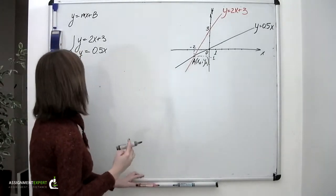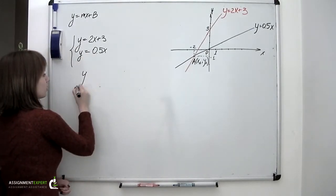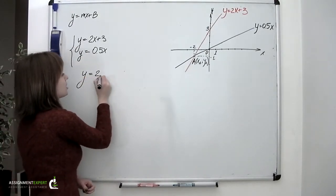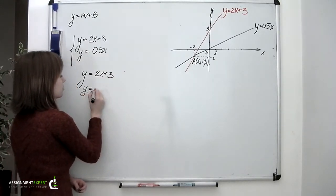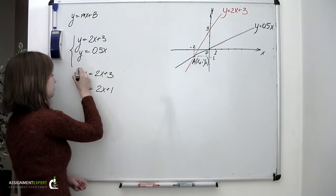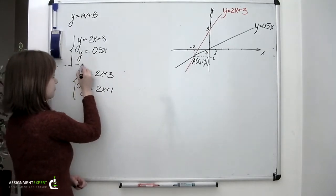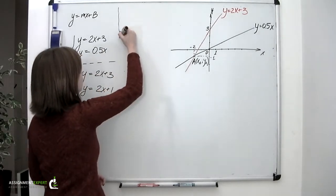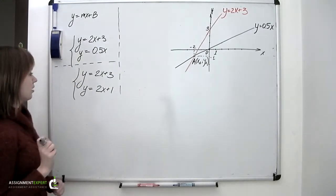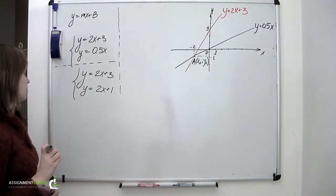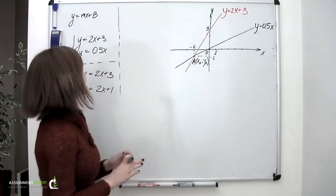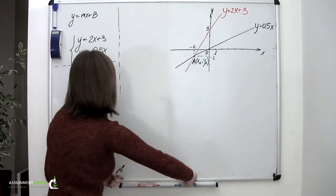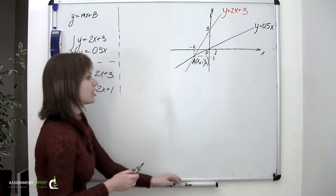Let's say we have a system where the first equation remains the same and the second goes as follows: y equals 2x plus 1. Now, the first line is already graphed. It's red. Let's graph the second one.